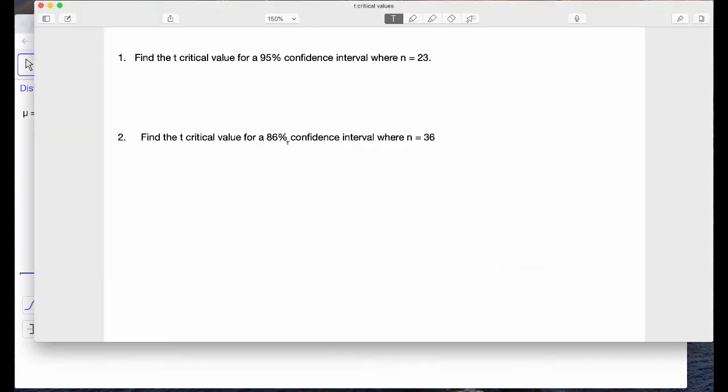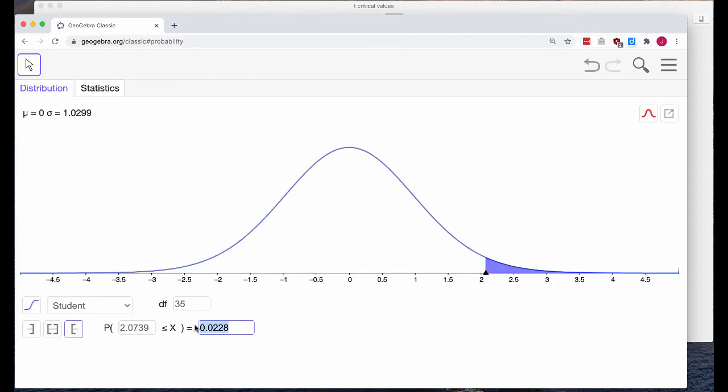And I'm still going to use the right tail area. So back again, that was 86% confidence. So I need to do some math. So 1 minus .86, that leaves us with .14, so 14%. And then split that in half because our confidence interval is always centered. We're going to have equal area in the tails. So 14% divided by 2 is 7%, and 7% as a decimal is .07.